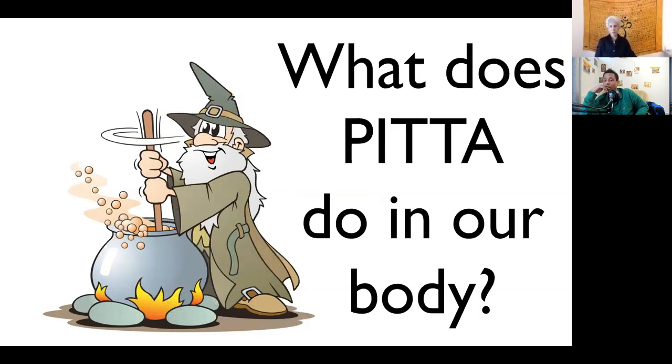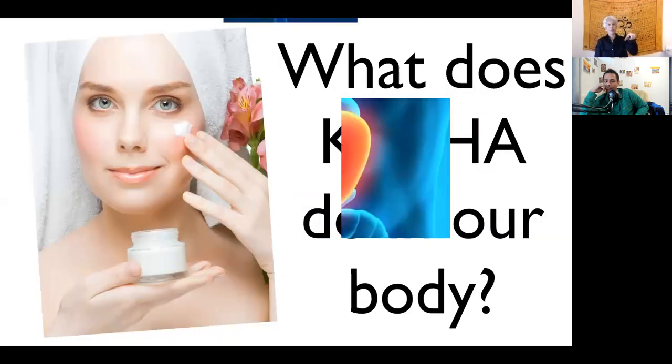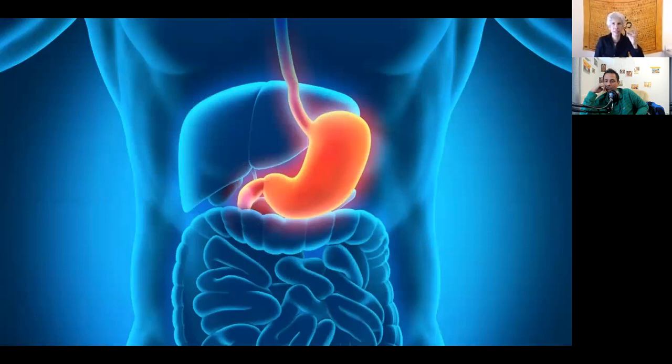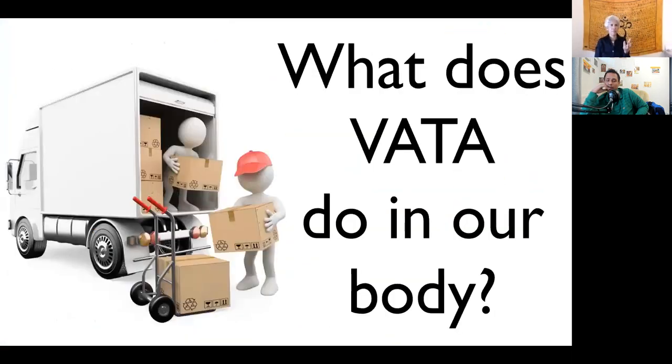So then here we go. You find that the home of pitta is in the small intestine. I don't think I had it on my chart here, but the home of kapha - the seat of kapha is in the stomach. Kapha, the home of kapha is in the stomach because when you eat a lot of milk and dairy foods, it builds a lot of mucus because the stomach has to have a lot of mucus so that the acids in the stomach will not burn through it.